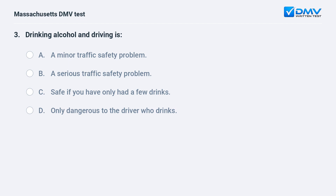Drinking alcohol and driving is: a. a minor traffic safety problem. b. a serious traffic safety problem. c. safe if you have only had a few drinks. d. only dangerous to the driver who drinks.